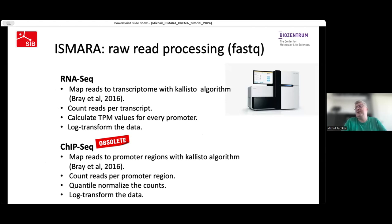For ChIP-seq, the difference is that we map the data not to the transcriptome but to promoter regions. Instead of calculating TPM values, we quantile normalize the counts of reads falling into the promoter regions. However, since the release of CREMA, ChIP-seq support in ISMAR is obsolete. If you want to analyze your ChIP-seq data, we strongly recommend using CREMA and not ISMAR.